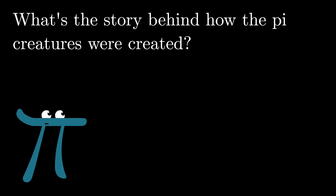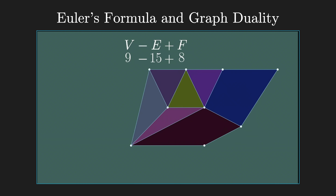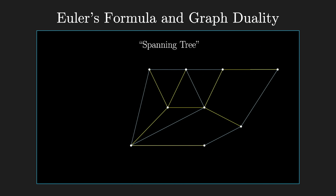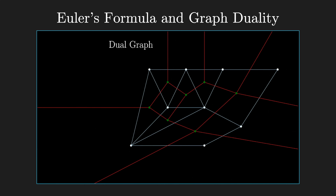What's the story behind how the pi creatures were created? Very early on, one of the first videos on the channel, I was talking about a proof of Euler's formula — V minus E plus F equals two. It was a proof I first saw in a book; I really loved the approach it took. The whole idea involved thinking about the spanning tree of a planar graph. You've got some graph you can draw in the plane and you want a set of edges such that from any one node you're able to walk to any other — a natural thing to literally talk about walking and stepping across. I wanted some notion of a character in this world.